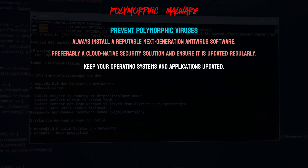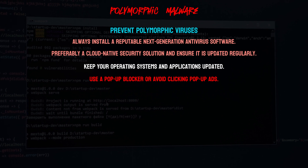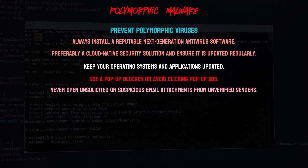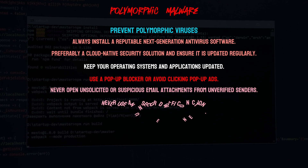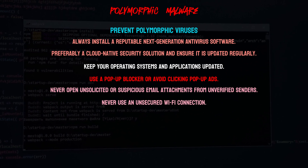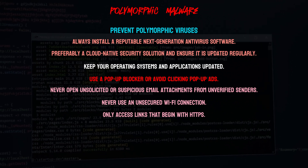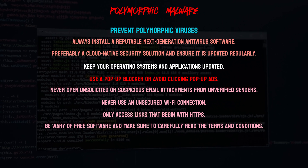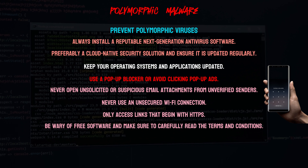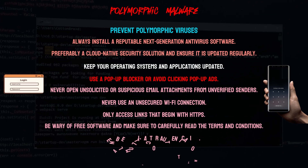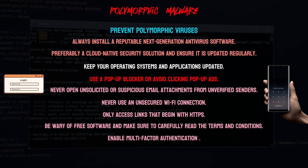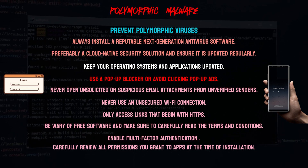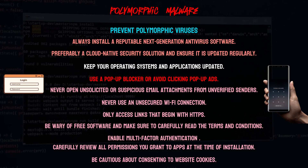Keep your operating systems and applications updated. Use a pop-up blocker or avoid clicking pop-up ads. Never open unsolicited or suspicious email attachments from unverified senders. Never use an unsecured Wi-Fi connection — only access links that begin with HTTPS. Be wary of free software and carefully read the terms and conditions. Put a screen lock on your smartphone. Use strong passwords on all devices. Enable multi-factor authentication on all devices and applications. Carefully review all permissions you grant to apps at the time of installation, and be cautious about consenting to website cookies.